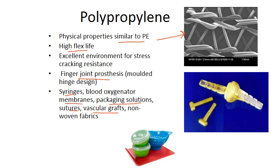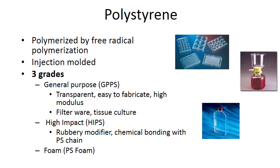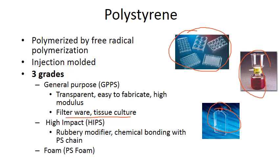Polypropylene is also used in packaging, sutures, vascular grafts, and non-woven fabrics. Polystyrenes are a harder type of plastic, thermoset, and are commonly seen in lab ware — tissue culture plates, filter units, and tissue cultures. They are usually injection molded. There are three grades: general purpose polystyrene, high impact polystyrene, and foam. Filter ware and tissue culture are the main applications, and the foams can be used in other medical devices.